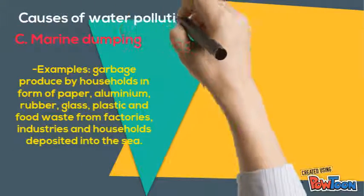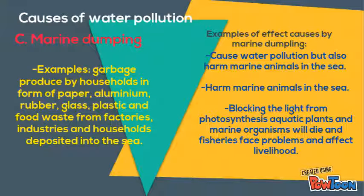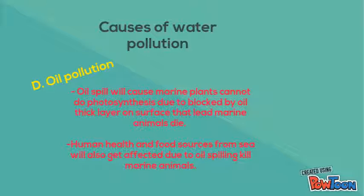Furthermore, marine dumping is garbage produced by households in the form of paper, aluminum, rubber, glass, plastic and food waste from factories, industries and households deposited into the sea. Here is an example of effects caused by marine dumping. Moving to the next point: oil pollution. Oil spills cause marine plants to be unable to do photosynthesis due to being blocked by a thick oil layer on the surface, which leads to marine animals dying. Human health and food sources from the sea are also affected as oil spills kill marine animals.